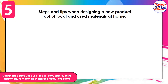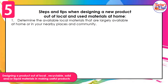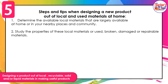These are the steps and tips when designing a new product out of local and used materials at home. First, determine the available local materials that are largely available at home, in your nearby places, and in your community. Second, study the properties of these local materials, or used, broken, damaged, or repairable materials.